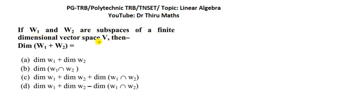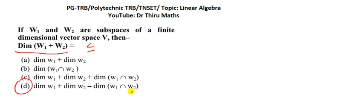If W1 and W2 are subspaces of a finite dimensional vector space V, then the theorem states: dimension of W1 plus W2 is equal to dimension of W1 plus dimension of W2 minus dimension of W1 intersection W2.